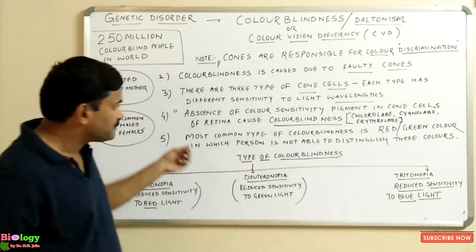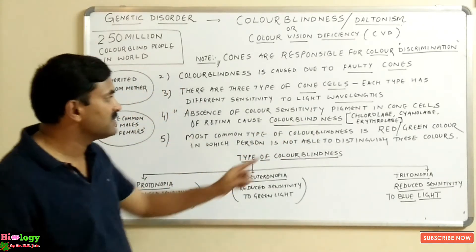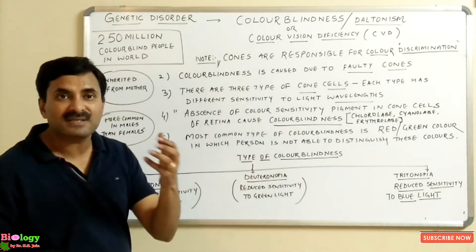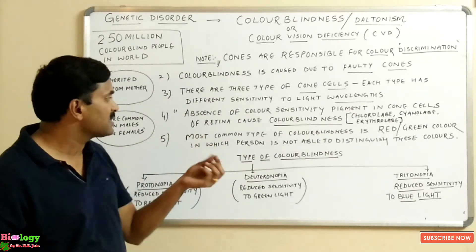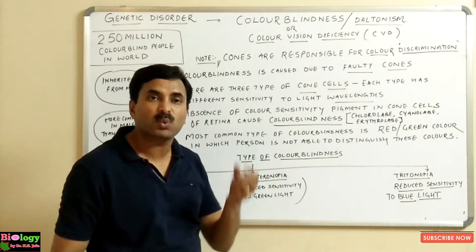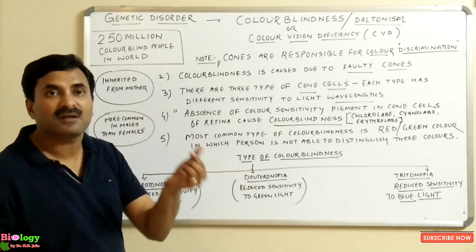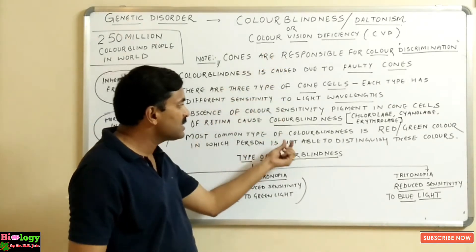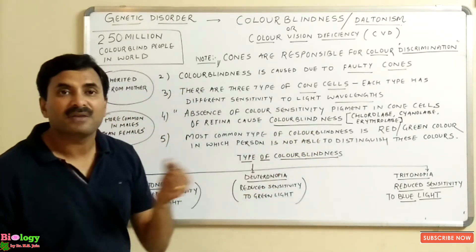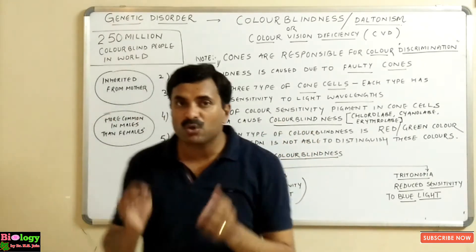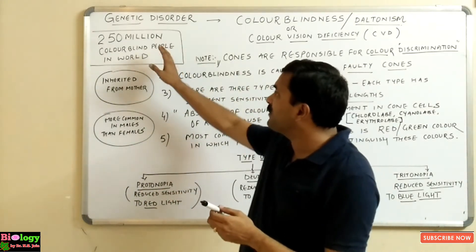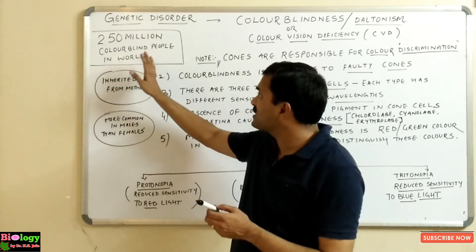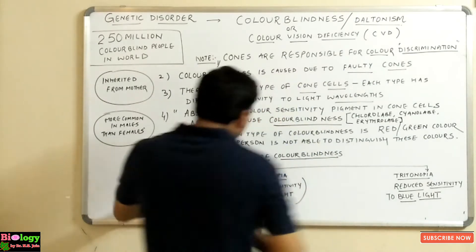The most common type of colorblindness is red-green colorblindness. The person suffering from this cannot distinguish between red and green color. It is known that worldwide there are at least 250 million colorblind people who are suffering from colorblindness.